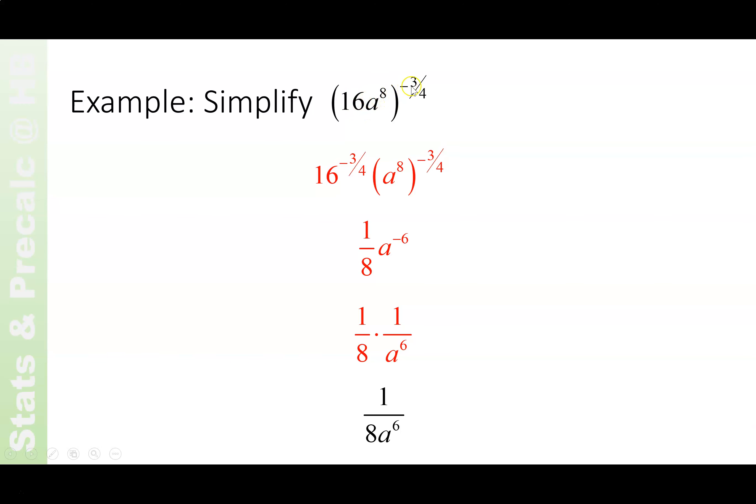16a to the 8th to the negative 3 4ths. That's 16 to the negative 3 4ths and a to the 8th to the negative 3 4ths. 16 to the negative 3 4ths is your 4th root, which is 2 cubed, which is 8, and the reciprocal, 1 8th.